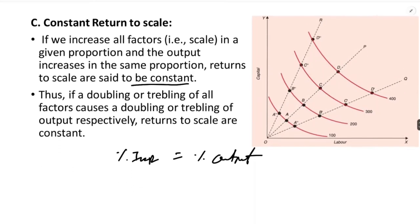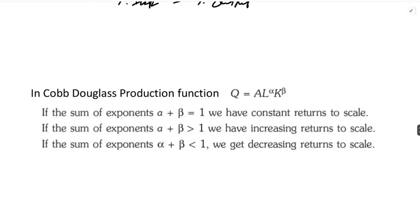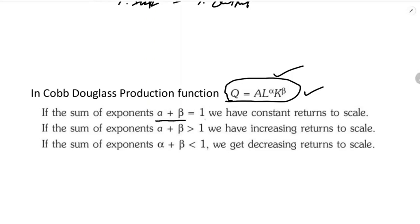Now, the Cobb-Douglas production function: Q = A · L^α · K^β, where Q is output, L is quantity of labor, α is the output elasticity of labor, K is the quantity of capital, and β is the output elasticity of capital. In the Cobb-Douglas production function: if α + β = 1, there is constant returns to scale; if α + β > 1, there is increasing returns to scale; and if α + β < 1, there is decreasing returns to scale.